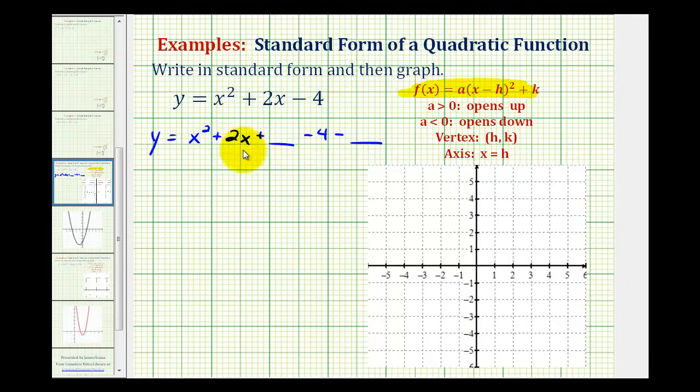Now to make this a perfect square trinomial, we're going to take half of b, or the coefficient of the x term, and square it. So if we take half of b and square it, we would have 2 divided by 2, that's 1, and 1 squared is equal to 1. So that means we're going to add 1 here. That'll make this a perfect square trinomial, and then to undo the plus 1, we'll subtract 1 here.